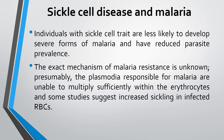An interesting fact: children with sickle cell disease are less likely to develop malaria, though the exact mechanism remains unknown. Plasmodium, responsible for malaria, is unable to multiply sufficiently within the erythrocytes of sickle cell patients because the RBCs have abnormal hemoglobin, creating an unfavorable environment. Some studies also suggest increased sickling in infected RBCs. This is another important MCQ in the staff nurse examination.